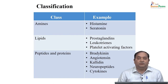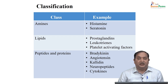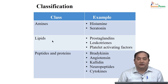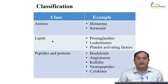What are the autocoids? If you classify them, some belong to amines — a typical example is histamine, and another is serotonin. Another group of autocoids are lipids — most commonly discussed are prostaglandins, leukotrienes, and platelet activating factors. The third class is peptides and proteins. Examples of peptides include bradykinin, angiotensin, calidine, neuropeptides, and different cytokines.